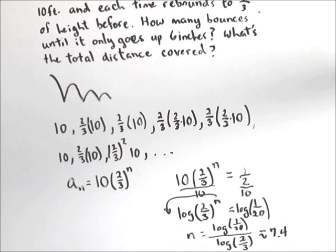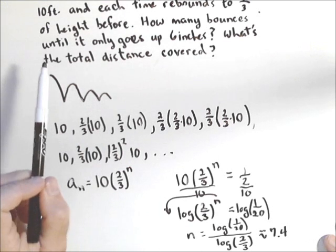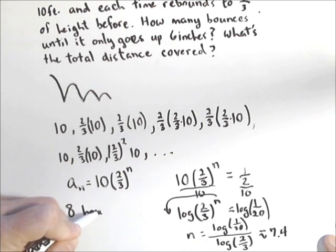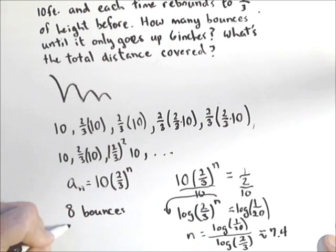So what that tells us is on the seventh bounce it's not quite, it's still a little more than six inches, so at eight bounces it's going to be less than six inches. So that's how we can handle that.